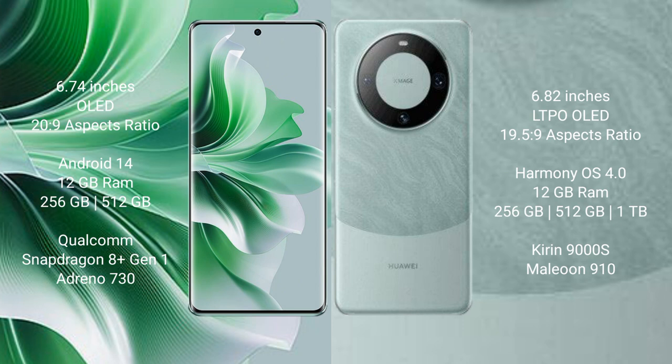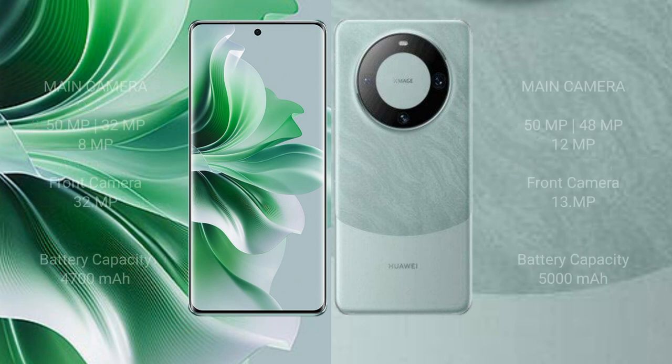Huawei Mate 60 Pro comes with 12GB RAM and 256GB internal storage, powered by the Kirin 9000s processor with GPU 900s.